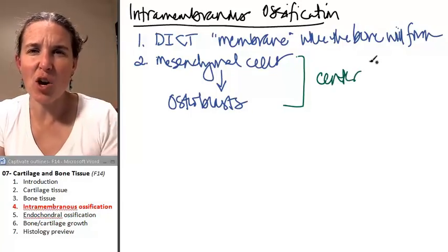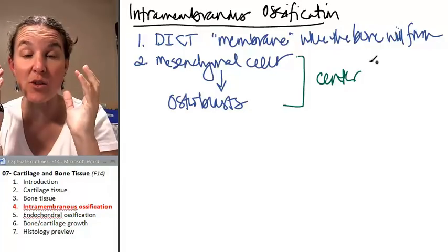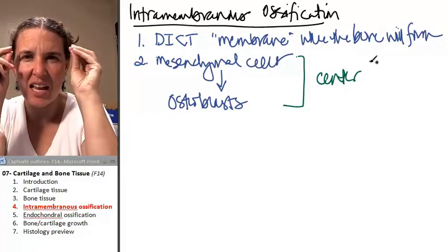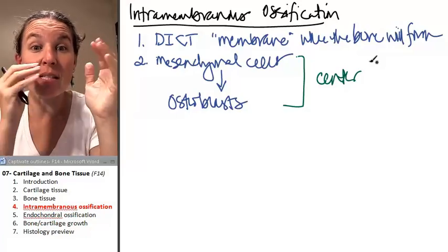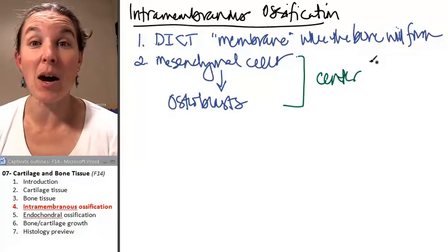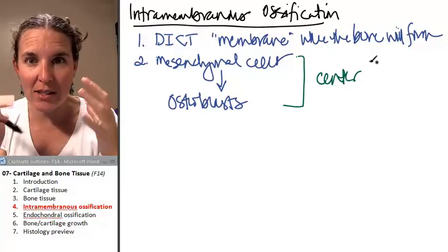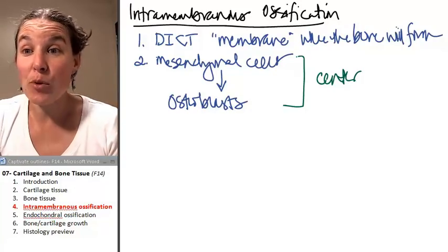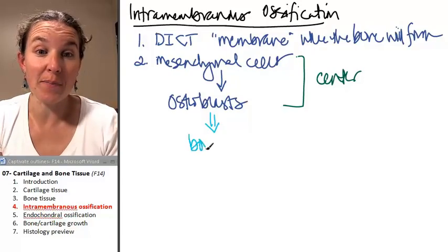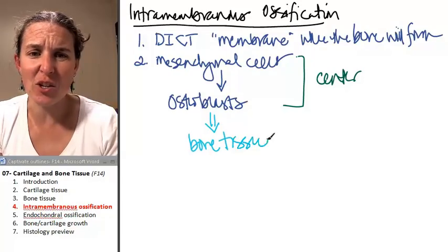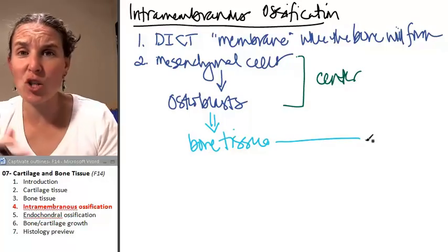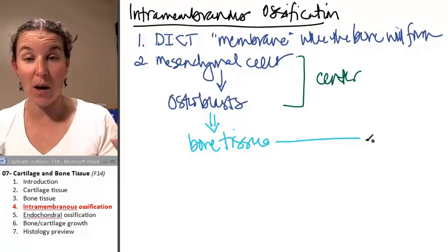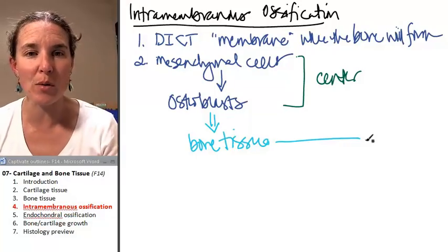There are places in the dense irregular connective tissue membrane where there's going to be a thickening and the mesenchymal cells there are going to differentiate and become osteoblasts. And the osteoblasts are going to start doing their thing as they produce bone matrix or bone tissue. Of course, they're going to get trapped and become osteocytes. And of course, they're going to build their little lacunas around themselves surrounded by bone matrix.